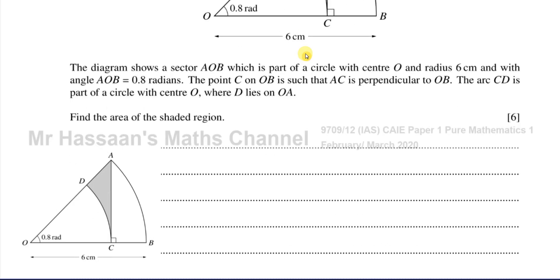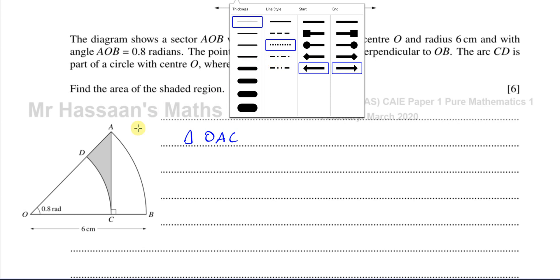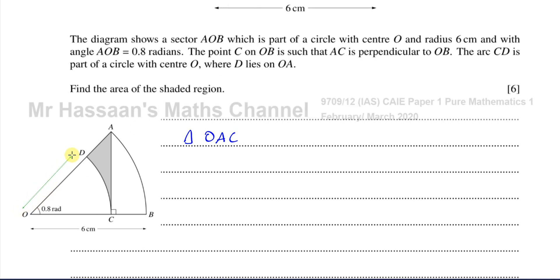So now what I'm looking at here is I'm looking at this triangle OAC. We know it's a right angle triangle. And we know the angle made. I also know that this length is 6 because it's the radius. So I guess we could maybe use that. I know this length here is also 6 centimeters because it's the radius of this big circle.